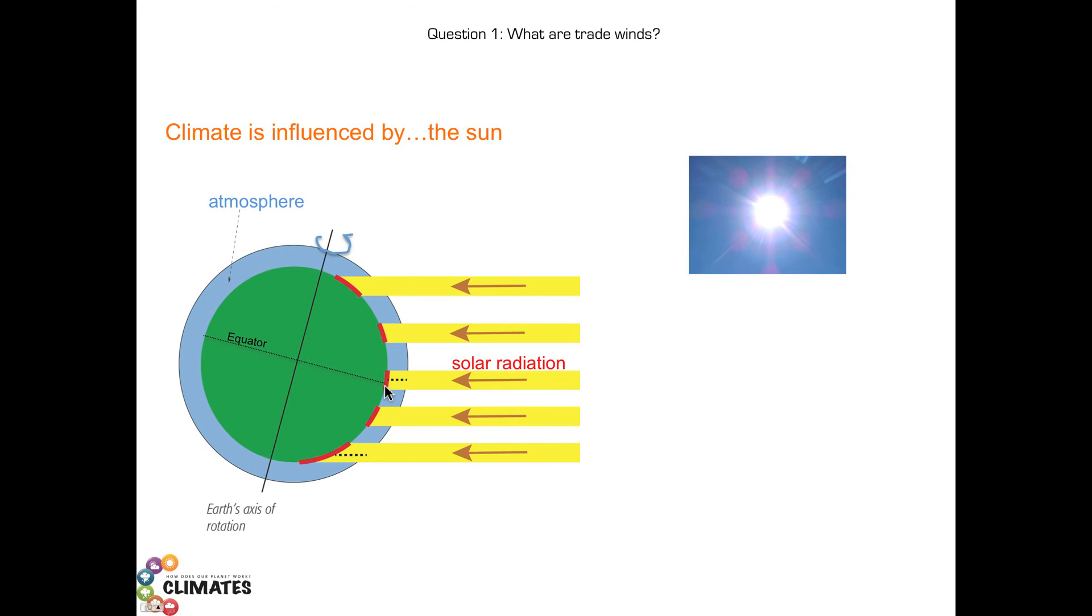If we consider the same amount of solar energy reaching this time the Earth in polar regions, rays will go through the atmosphere and will reach the surface of the Earth over a larger region. This implies that solar radiation is stronger at the equator compared to polar regions.